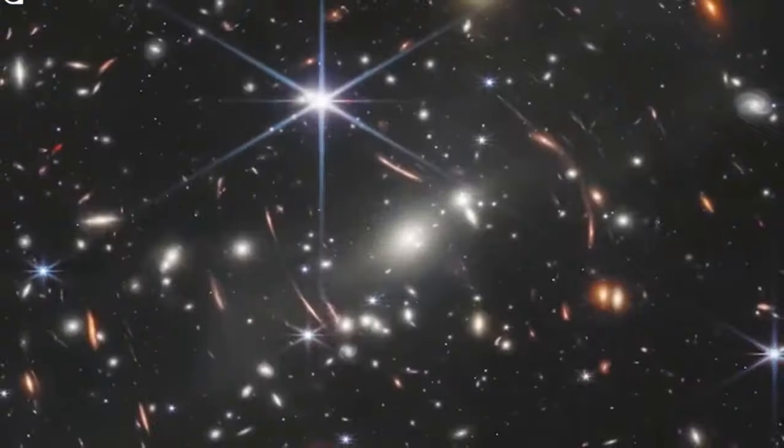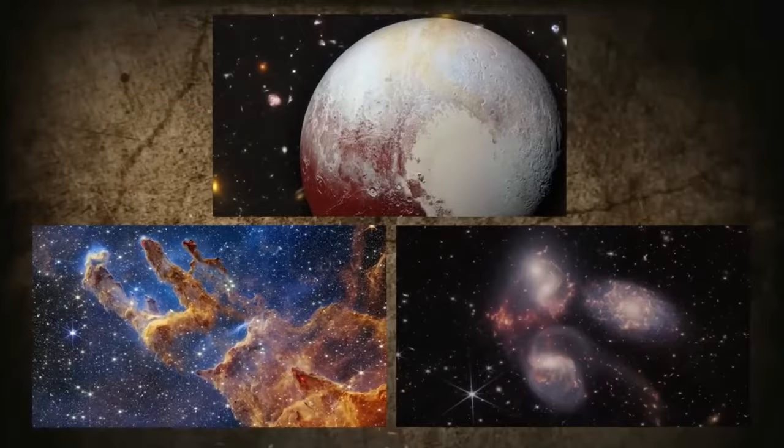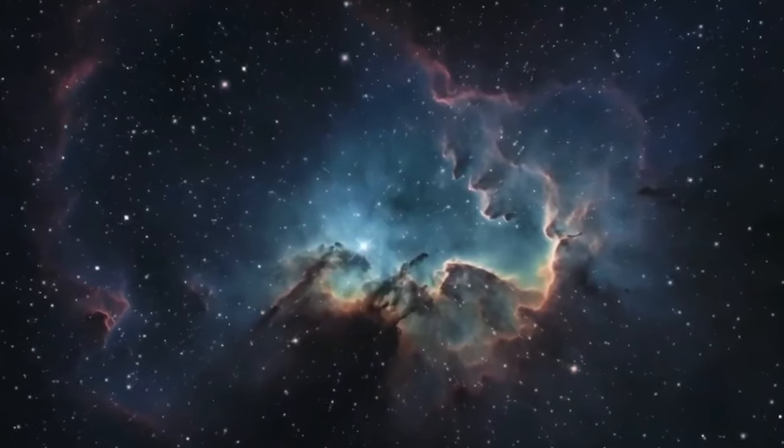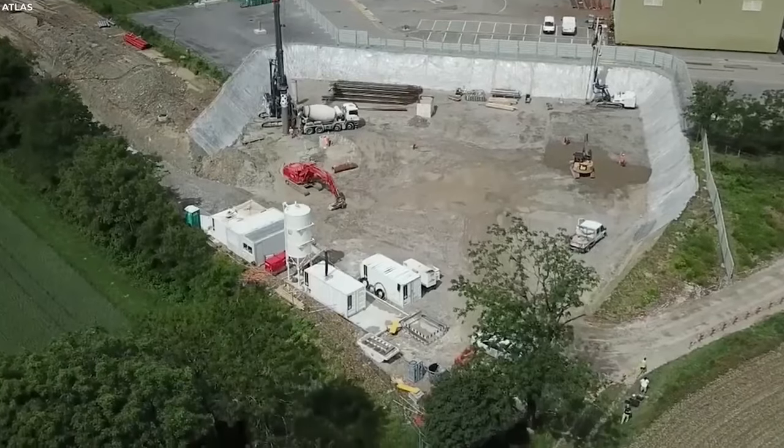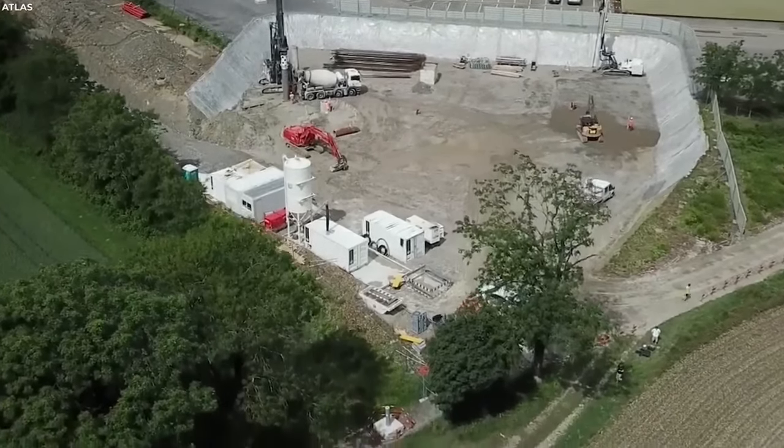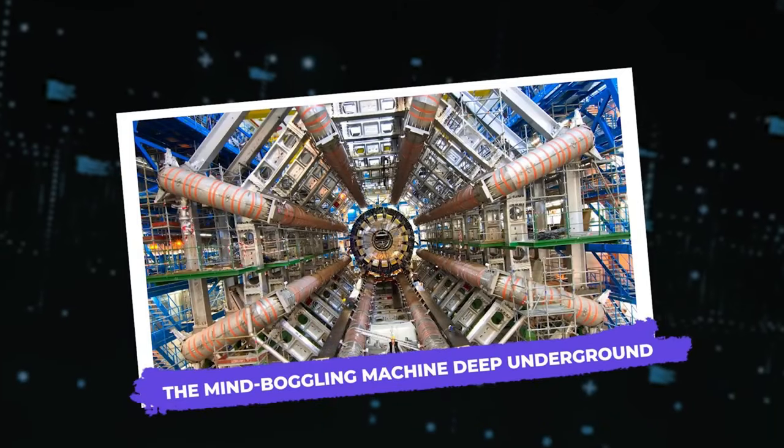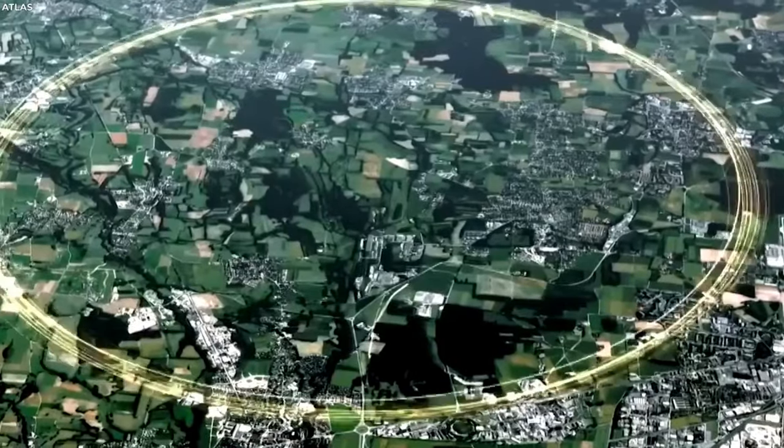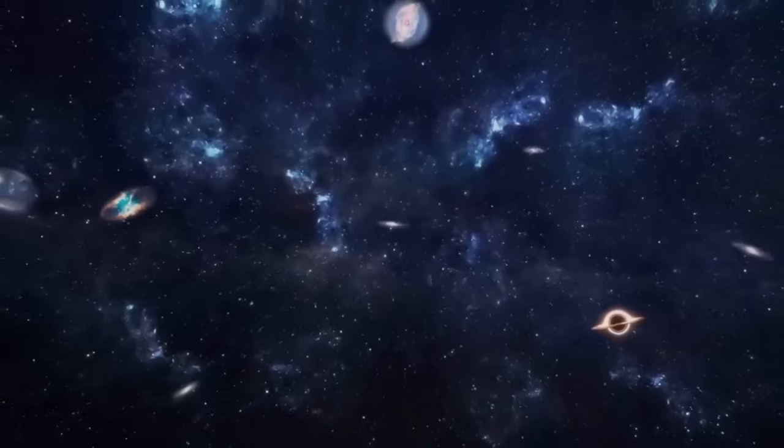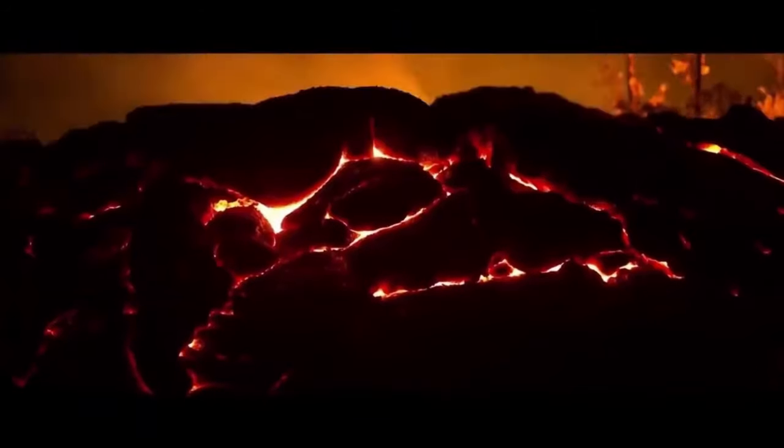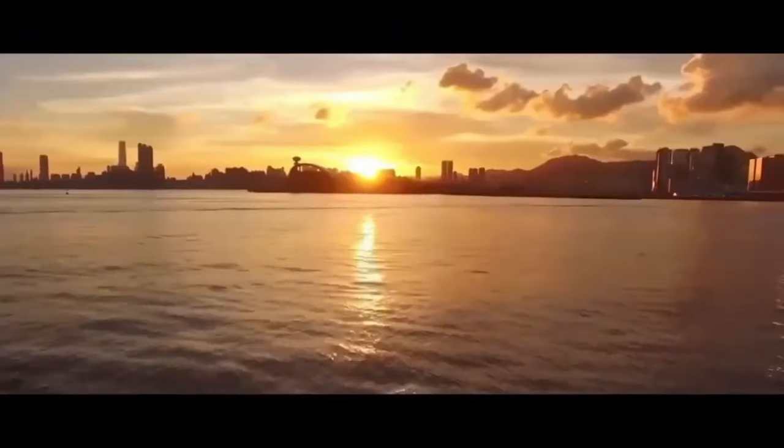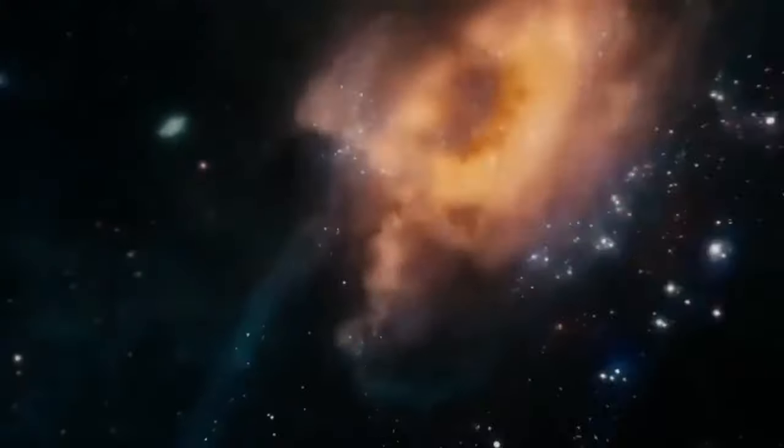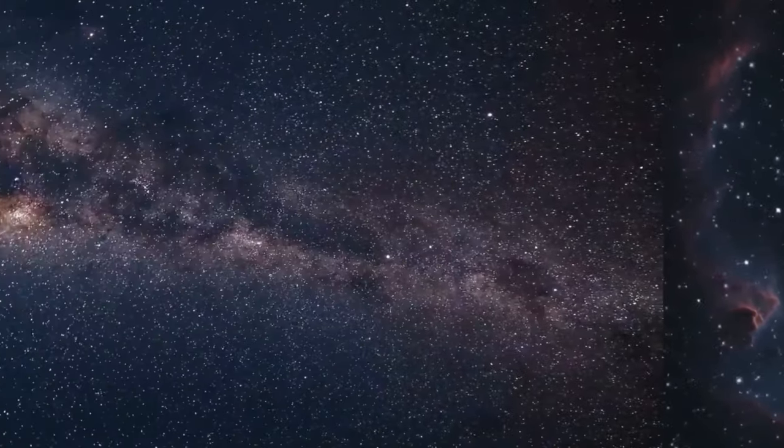Soon after, in 1952, 11 countries came together to sign the CERN convention, establishing the organization. By 1957, CERN was officially up and running on the border between Switzerland and France. The primary objective of CERN was to research atomic nuclei and their constituents. To achieve this, particle accelerators were required. These immense machines propel particles to near light speed, smashing them together to reveal insights into the universe's basic building blocks.